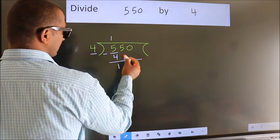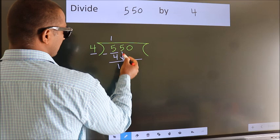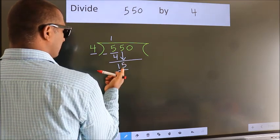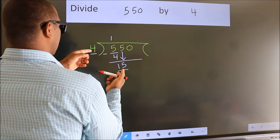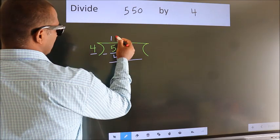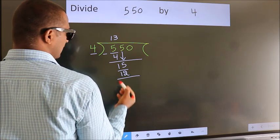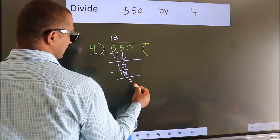After this, bring down the next number. So 5 down, making 15. A number close to 15 in the 4 table is 4 threes, which is 12. Now we subtract. We get 3.